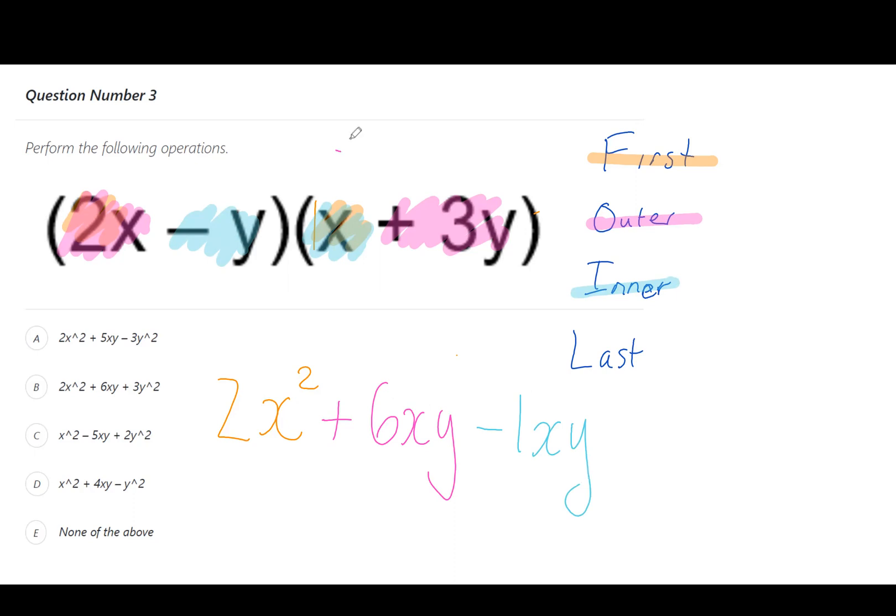Our last step is the last one in each bracket. That's the negative y and the plus 3y. Negative 1 times positive 3 is negative 3, and it's y squared because like the x's it's just two of them, so we write that as a power.